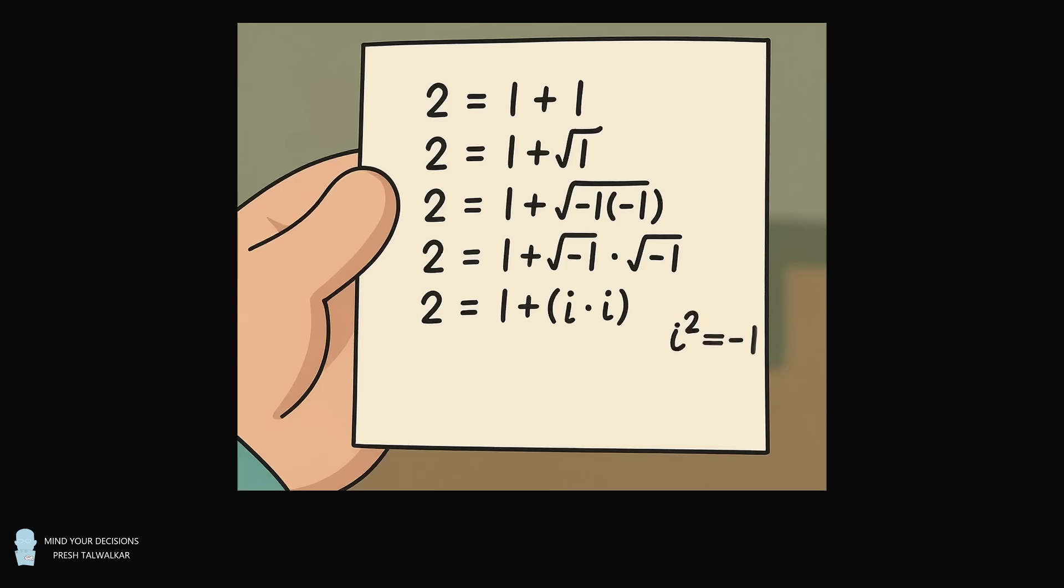and i squared is equal to minus 1. So 2 is equal to 1 plus minus 1, but 1 plus minus 1 is equal to 0. Therefore, 2 is equal to 0.